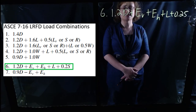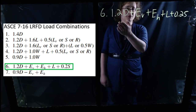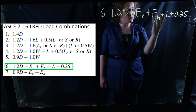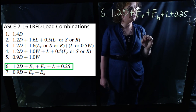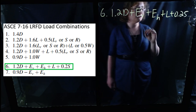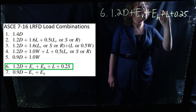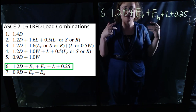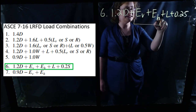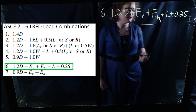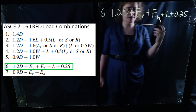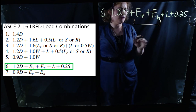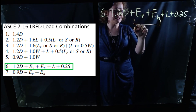Next we have load combination 6 — essentially our first big seismic case. This is 1.2 times dead, plus 1.0 times Ev (the vertical earthquake load in a building), plus 1.0 times Eh (the horizontal earthquake loading on a building), plus a service level 1.0 times live load, plus 0.2 times S — our snow load. So essentially what this case represents is your design earthquake case. Seismic loading tends to be very large — depending on where you're designing — the kind of thing that tends to control or dominate designs in seismic regions. This case really represents the seismic critical case.